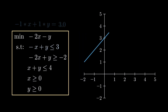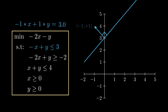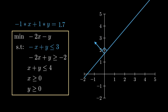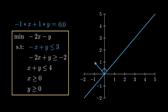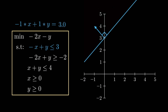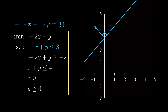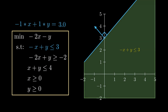This is the line minus x plus y equals 3. If we take the coefficients of the x and y variables and form a vector out of them, then this vector points in a direction that's normal to the line. If we shift the line in the direction of the normal vector, the right-hand side increases, and if we shift in the opposite direction, the right-hand side decreases. Minus x plus y greater than or equal to 3 corresponds to the half space the normal vector is pointing in. Since we want minus x plus y less than or equal to 3, this corresponds to the other half space.